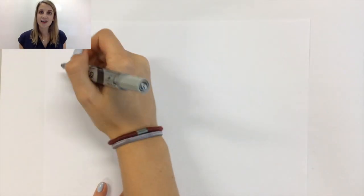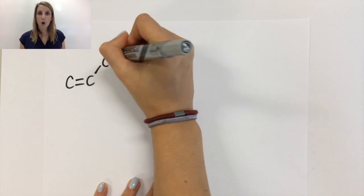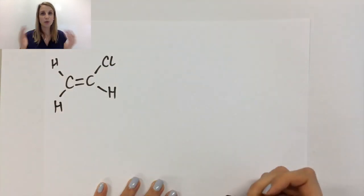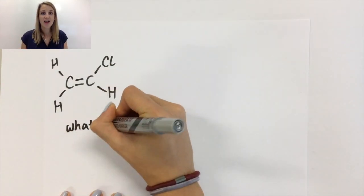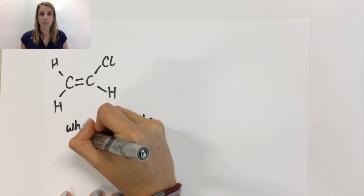This is chloroethene. Chloroethene can be made into a polymer because it contains that double bond that's super reactive that allows it to become an addition polymer.